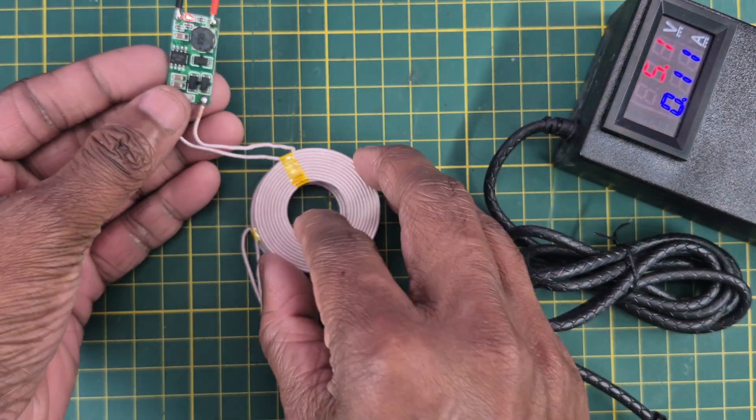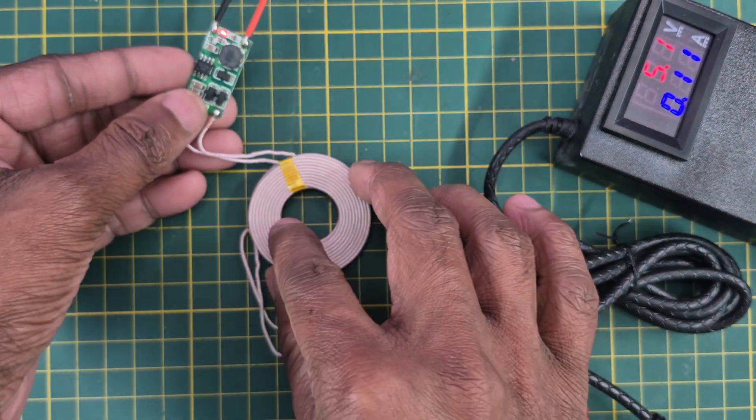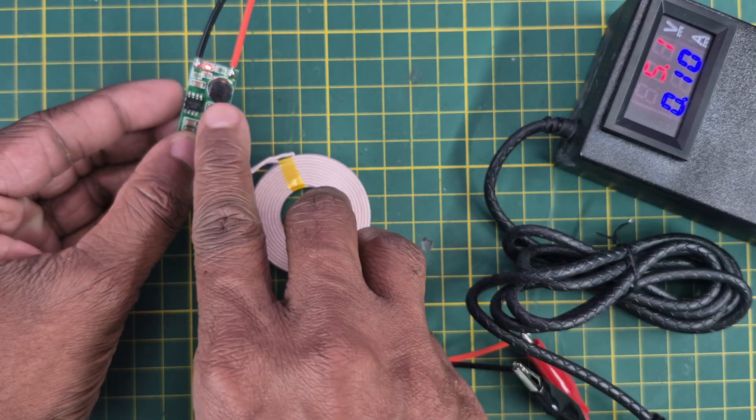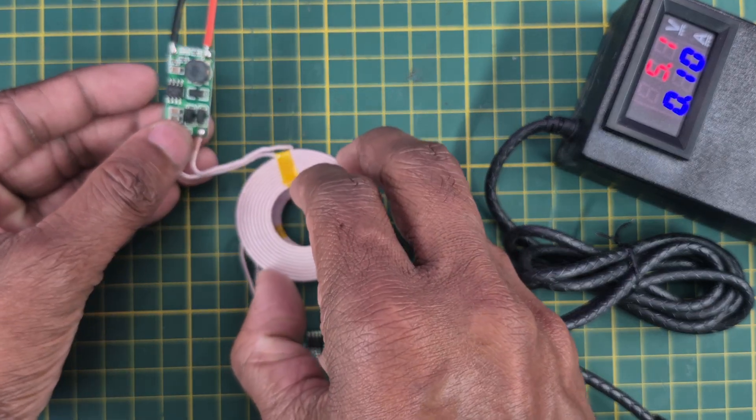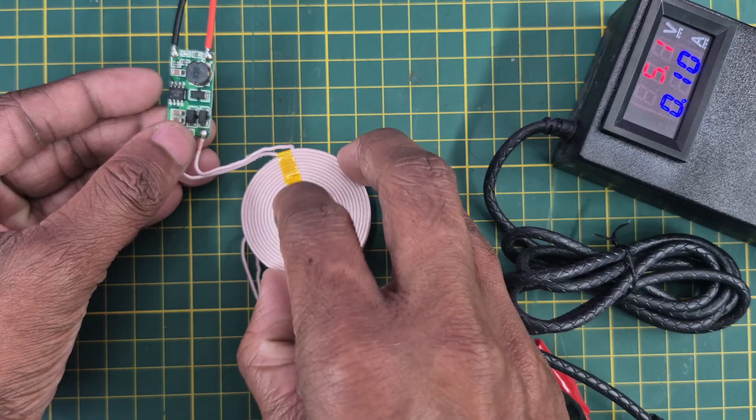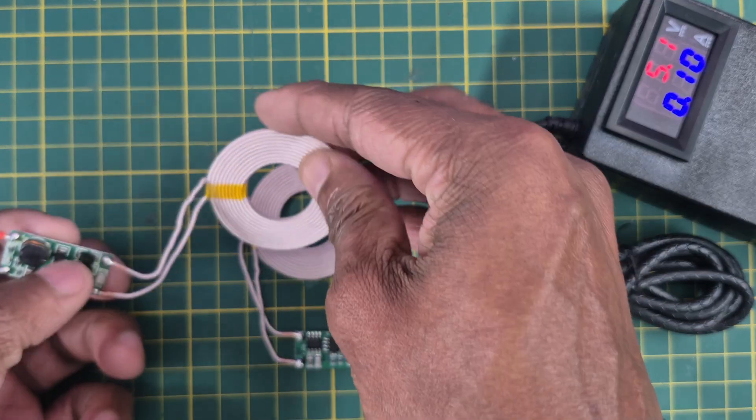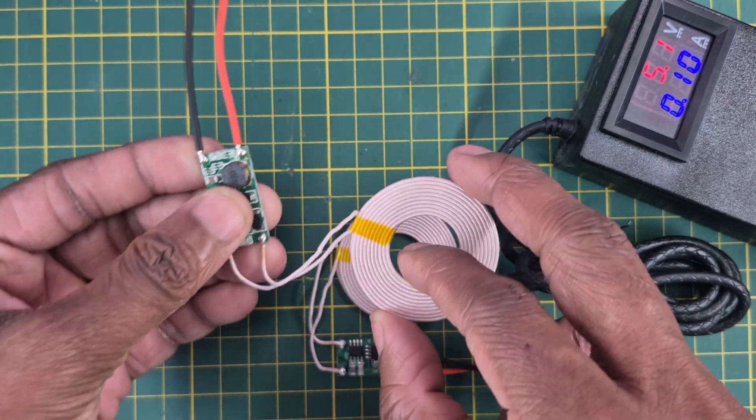You can see here we are getting this LED indicator. Here we will connect some motor or light to this receiver and we will see how this is performing.